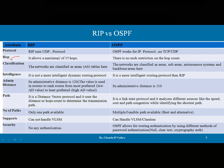In terms of hop count constraint, RIP allows a maximum of 15 hops only. If the network has more than 15 hops, it will be considered unreachable, keeping the network size small. OSPF has no such restriction — a very large network can be connected using OSPF. There can be 100, 200, 300, or even 1000 routers connected, because the network is divided in a hierarchical fashion with no constraint on hop count.